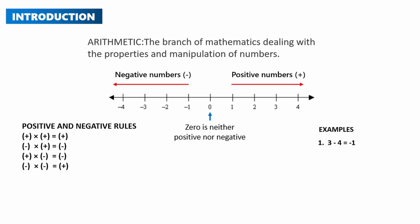Let's look at some examples. Number one: 3 minus 4. On the number line, starting at positive 3, you count 1, 2, 3, 4 to the left and arrive at negative 1. Number two: negative 2 plus 3. Starting at negative 2, you move to the right 1, 2, 3 and land on 1.